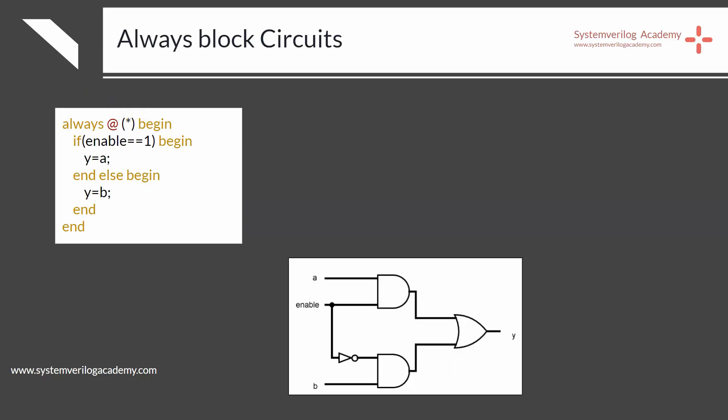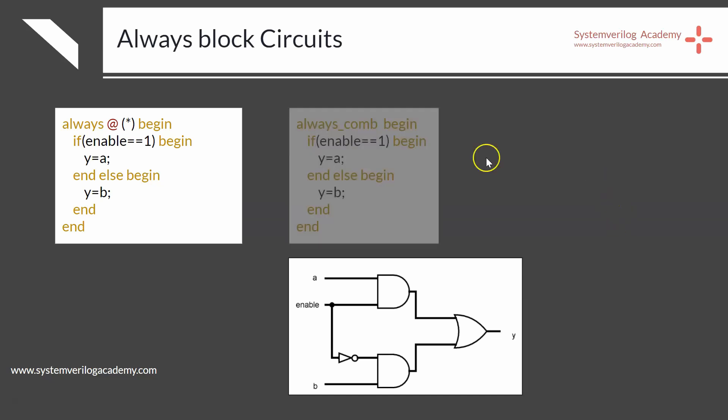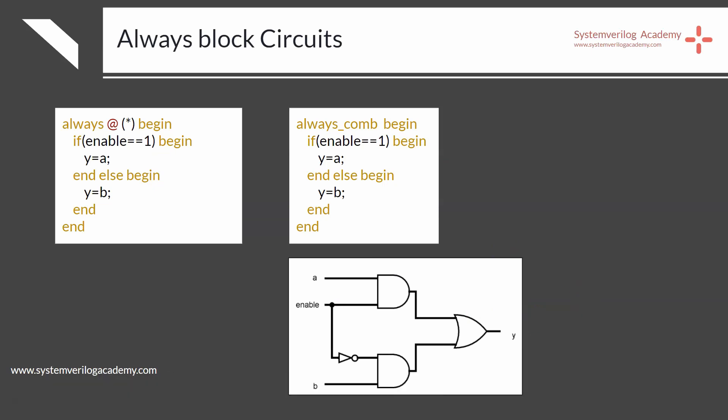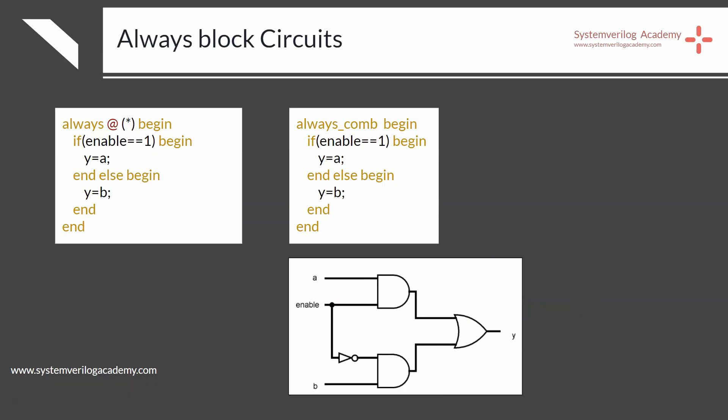If you use the SystemVerilog-specific always_comb block instead of always @(*), the output circuit will be the same in this case. The only advantage is that the synthesizing tool does not need to examine the code to identify the type of circuit.